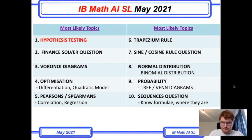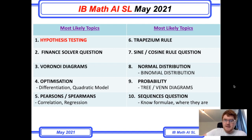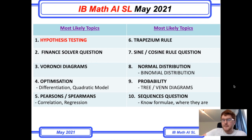Optimization questions were very popular with IB Standard Level Math Studies and I think one will appear on paper two. They could approach it from a differentiation perspective where you need to work out maximum or minima, or from a quadratic model perspective to find the maximum of a quadratic. So make sure you revise optimization.